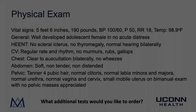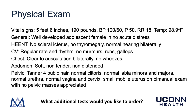Here are the results of the physical exam for our patient LB. Her height is 5'6" and she weighs 190 pounds. Blood pressure is 100/60, pulse is 50, respiratory rate is 18, and she is afebrile at 98.9°F. She is a well-developed adolescent female in no acute distress. HEENT exam shows no scleral icterus, no thyromegaly, and normal hearing bilaterally. Cardiovascular exam is regular rate and rhythm with no murmurs. Chest is clear to auscultation bilaterally. Abdomen is soft, non-tender, and non-distended. On pelvic exam, she has Tanner stage four pubic hair distribution, a normal clitoris, normal labia minora and majora, normal urethra, normal vagina and cervix, and a small mobile uterus on bimanual exam with no pelvic masses appreciated.